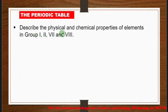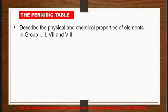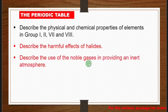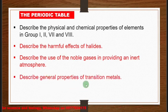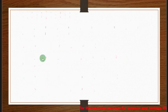Under the periodic table, you must be able to describe the physical and chemical properties of elements in groups one, two, seven, and eight. You also need to describe the harmful effects of halides, describe the use of noble gases in providing an inert atmosphere, and describe general properties and uses of transition metals.